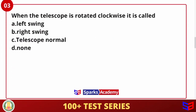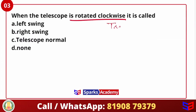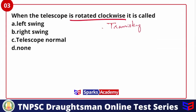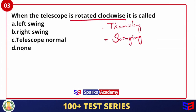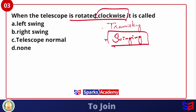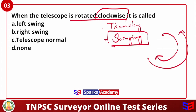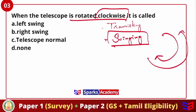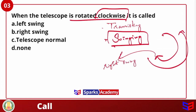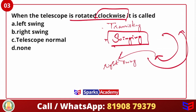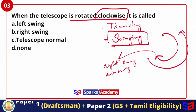Next question: 'When the telescope is rotated clockwise, it is called.' When the telescope is rotated clockwise, we call it Right Swing. When the telescope is rotated anti-clockwise, it is called Left Swing. So the answer to this question is Right Swing.